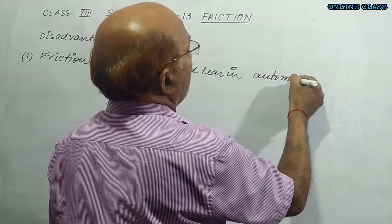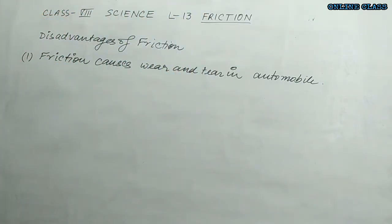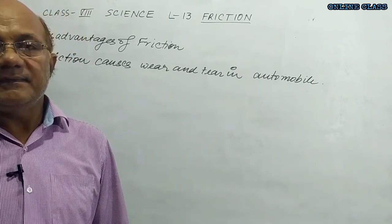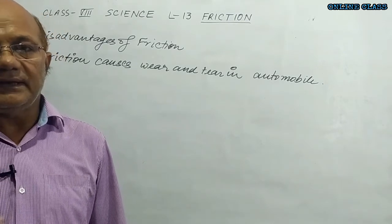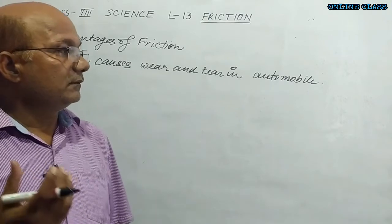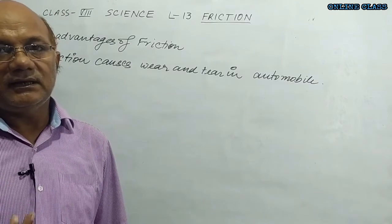In automobiles, the tires get damaged, and this is only because of friction between the road and the tire. A lot of money gets wasted due to this friction in the case of automobiles.